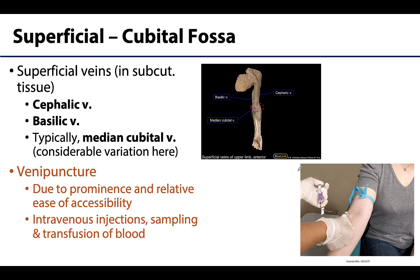Deep to the skin, and importantly within the subcutaneous tissue before reaching the deep fascia, you encounter a grouping of vasculature in the cubital fossa region. We discussed these veins in the first MSK session — the cephalic vein and basilic vein are the major superficial veins of the upper limb.